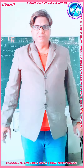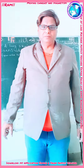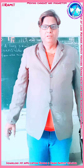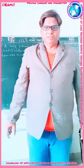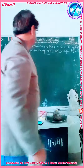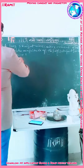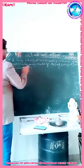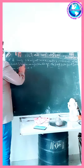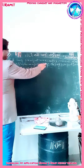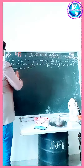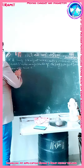Today in physics, we look at moving charges and magnetism. Now we see a numerical like this: a long straight wire carries a current of 35 ampere. What is the magnitude of the field B at a point 20 centimeter from the wire?